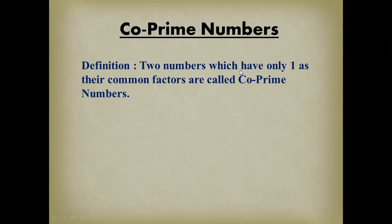When you have any two numbers and you find their factors, and then check the common factors — if the only common factor is the number one, then that pair of numbers is called co-prime numbers. Two numbers which have only one as a common factor are co-prime numbers.